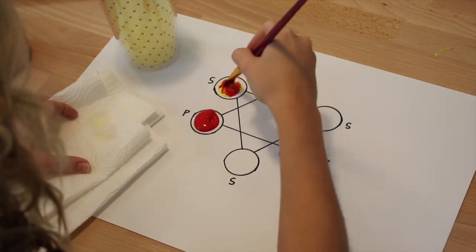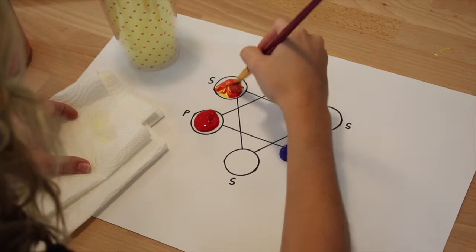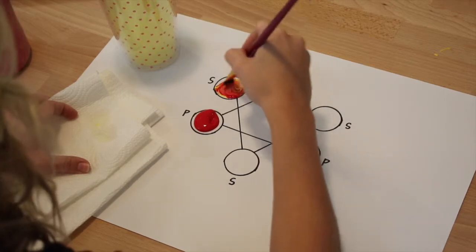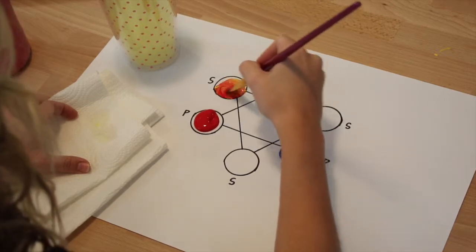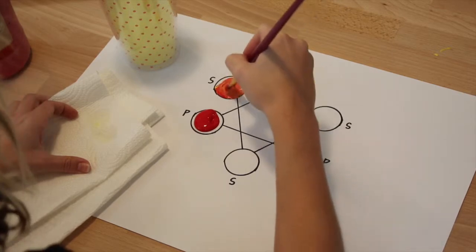When we mix red and yellow, two primary colors, we will get a secondary color. This color will be orange. Mix the paint together.